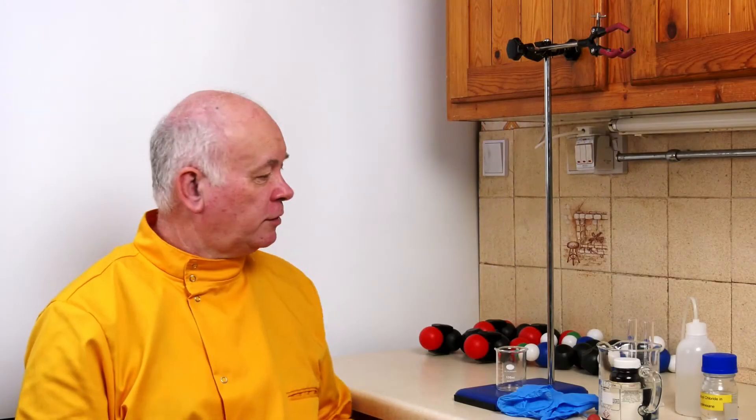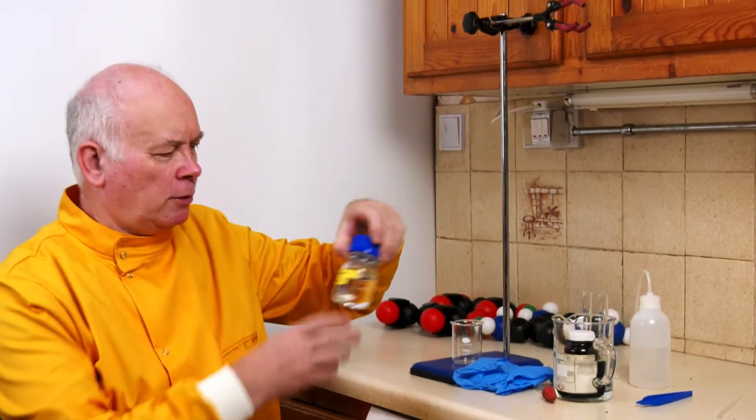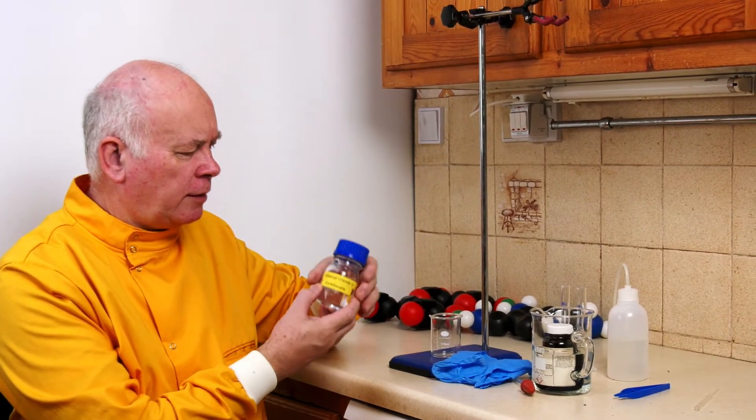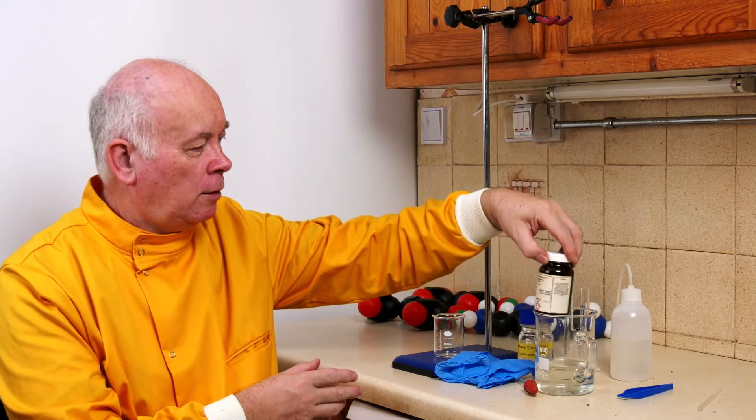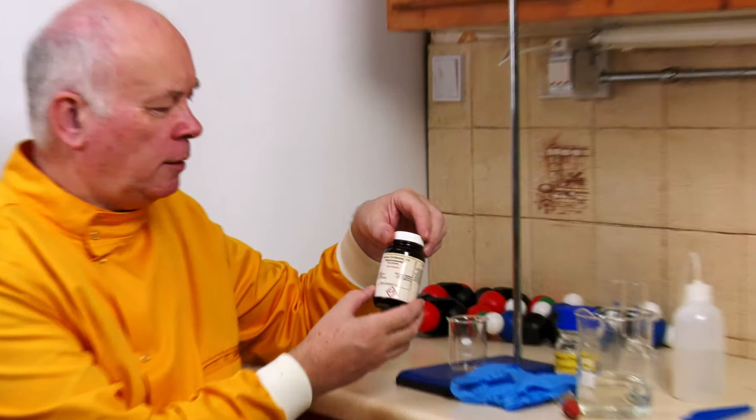So this is the nylon rope trick. We've got a couple of chemicals. We've got this stuff which is sebacoyl chloride in cyclohexane. It's oil based so this will float on this stuff which is hexane 1,6-diamine.